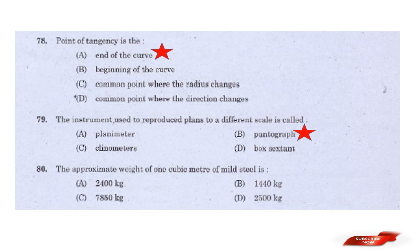Question: The approximate weight of one cubic meter of mild steel is — options: 2,400 kg, 1,440 kg, 7,850 kg, 2,500 kg. Answer: Option C — 7,850 kg. The approximate weight of 1 m³ of mild steel is 7,850 kg.